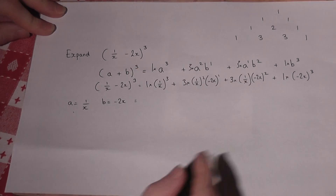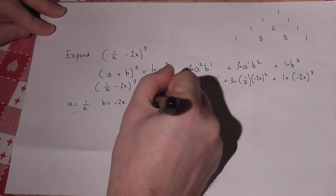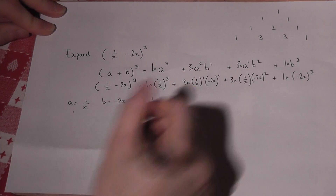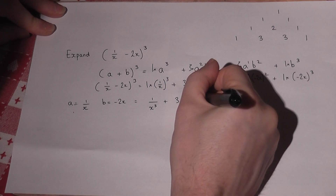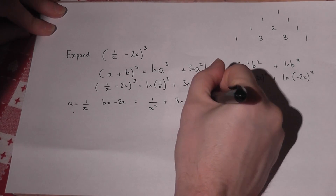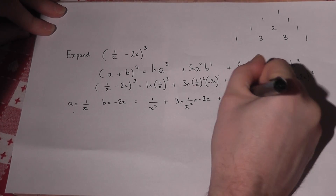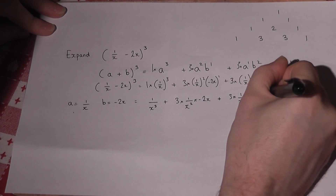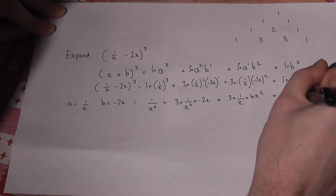I work the parts out step by step. 1 over x cubed is just 1 over x cubed — 1 cubed is 1, x cubed is x cubed. Then 3 lots of 1 squared over x squared, times minus 2x to the power of 1. Then it's 3 times 1 over x, and minus 2 squared is 4, so times 4x squared. And finally, minus 2 cubed is minus 8, giving minus 8x cubed.